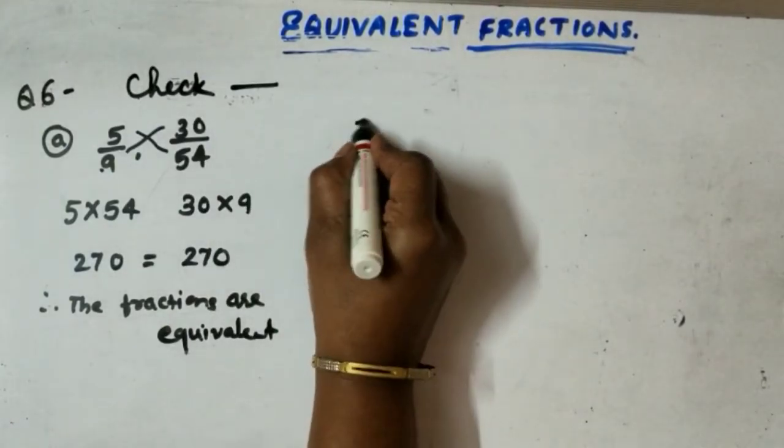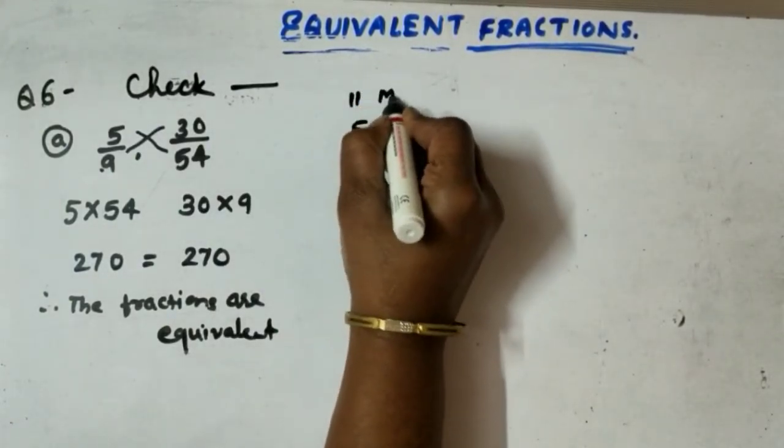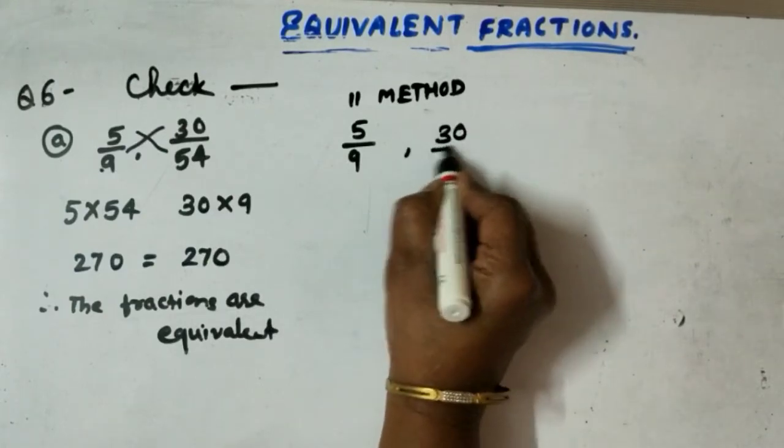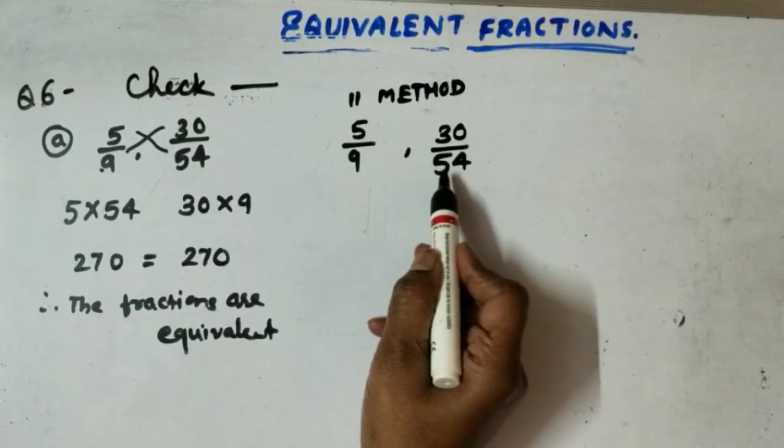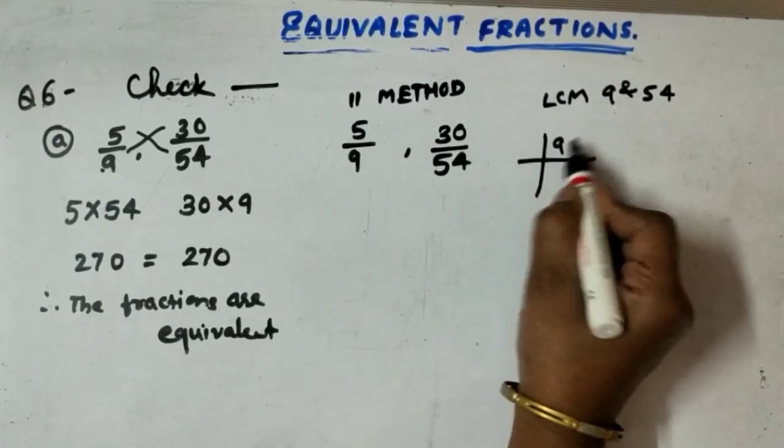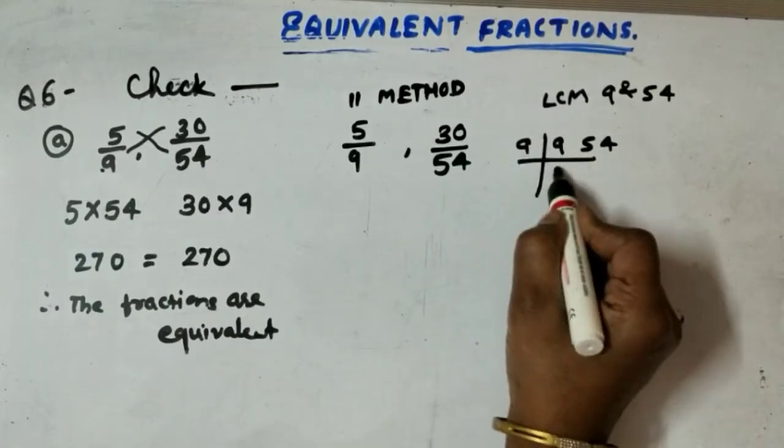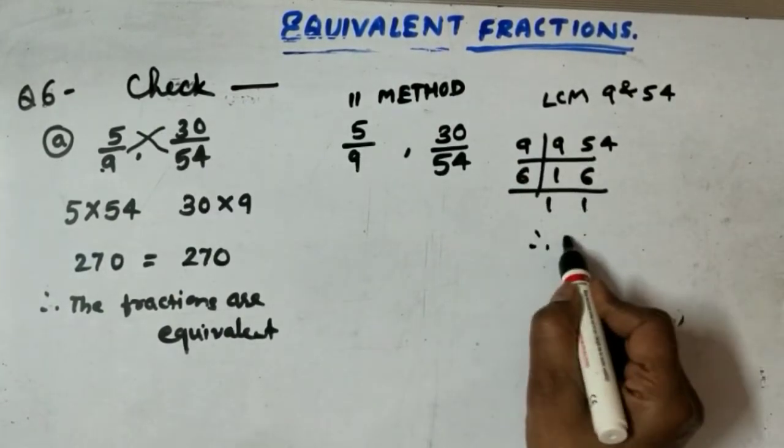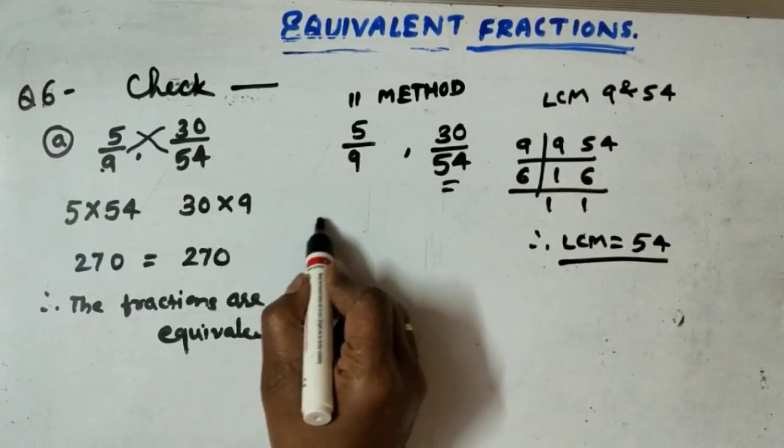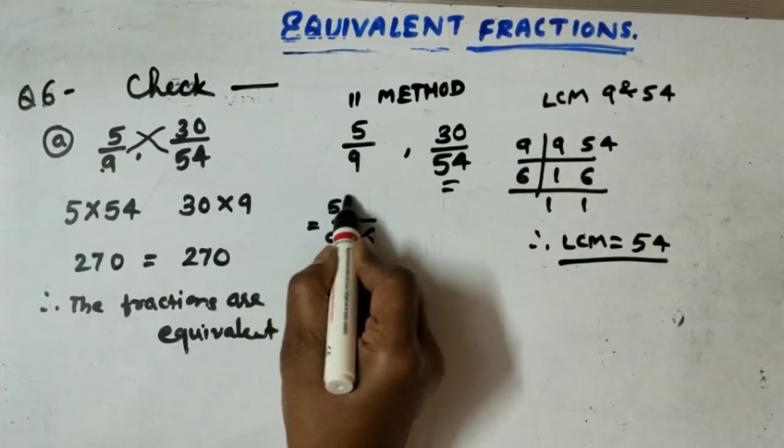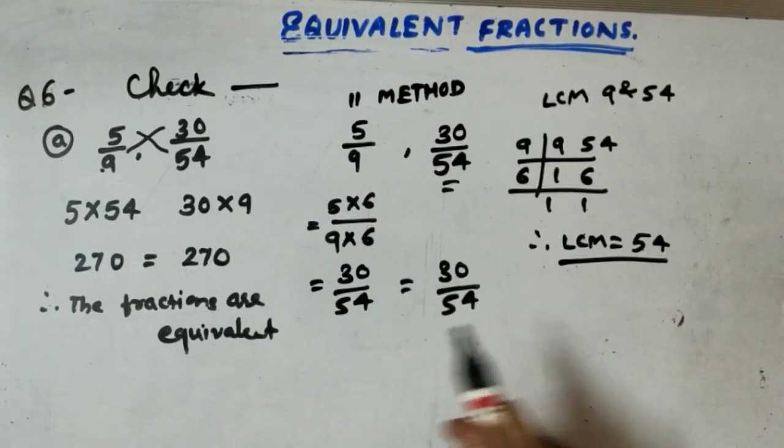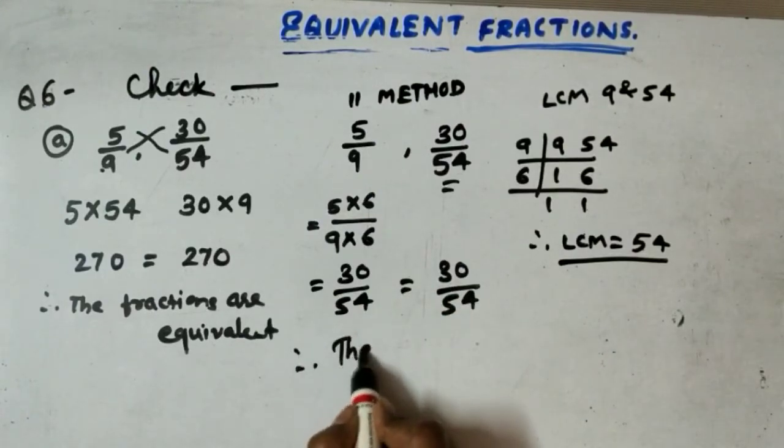The other method is second method. 5 by 9 and 30 by 54. Now children, equalize the denominator. Find LCM of 9 and 54. LCM of 9 and 54 is 54. So prepare the denominator of 54. Here 54 is there already. Here make the denominator 54: 9 into 6, 5 into 6, 30 by 54. Here already 30 by 54. Here the fractions are equivalent. Therefore, the fractions are equivalent.